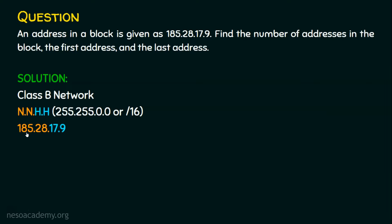Suppose in an organization, any host starting with the IP address 185.28 will be in this network irrespective of the next two octets. So 185.28.50.x will be in this network, 185.28.200.9 will be in this network, and 185.28.255.x will also be in this network. We have a lot of hosts in this network.